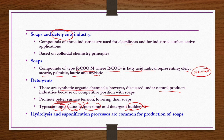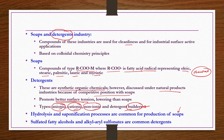Hydrolysis and sulfonation processes are commonly used for the production of soaps. Common detergents are sulfated fatty alcohols and alkyl aryl sulfonates.